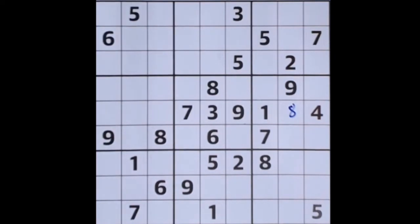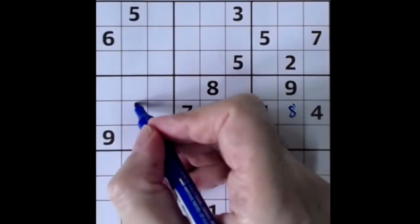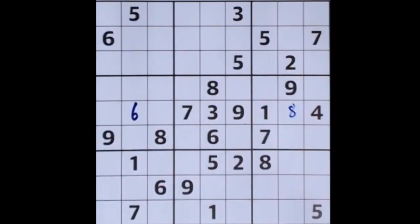So what's missing along here then? So 2, 5 and 6 have to be missing along here. So we've got 6 blocking here, 6 blocking here, so 6 is in this square and the 2 and 5 are in these two squares.